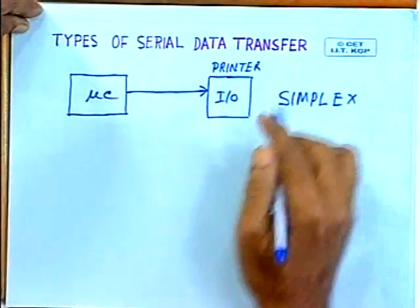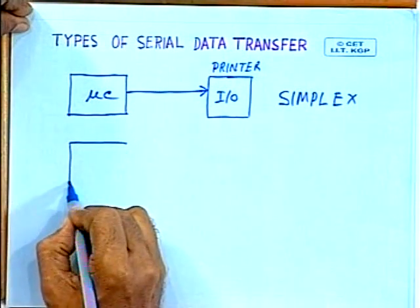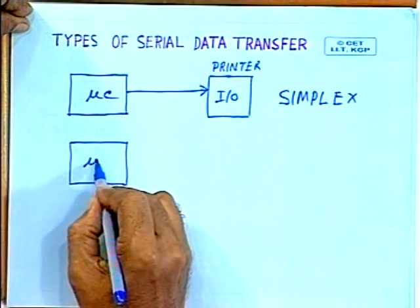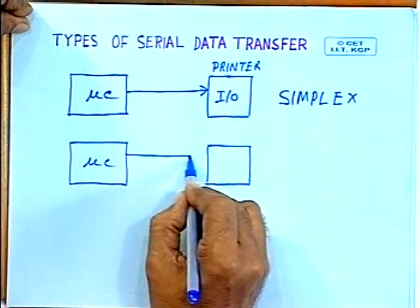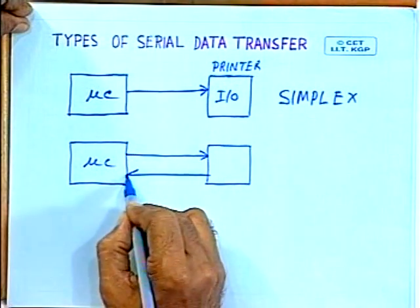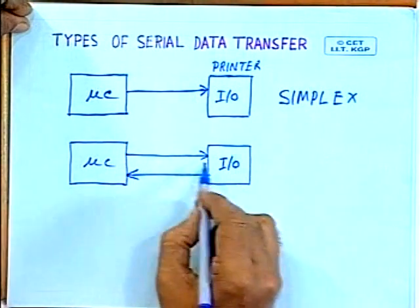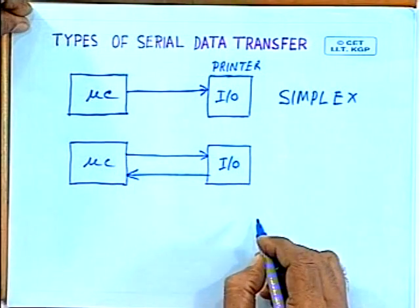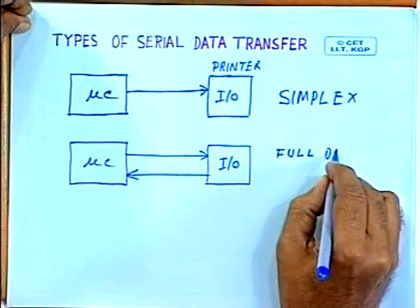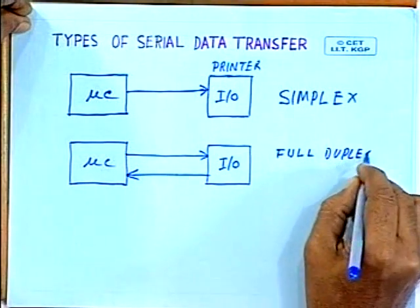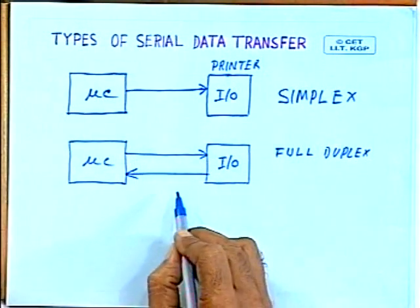On the other hand, the IO device can be a little intelligent and communication can take place in both directions — from microcomputer to IO device as well as in the other direction. In such a case, the IO device is communicating in both directions with the microcomputer. This particular technique is known as full duplex, where simultaneously data transfer in both directions is possible, obviously in serial form, bit by bit.